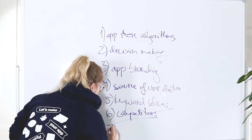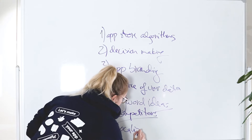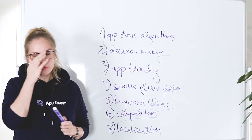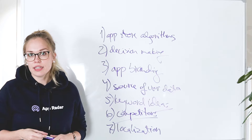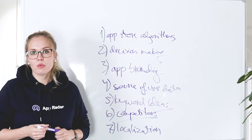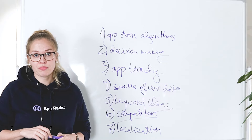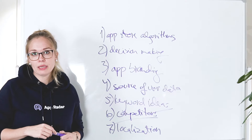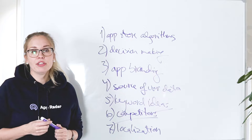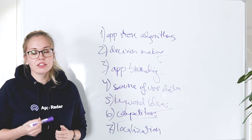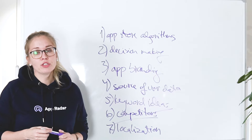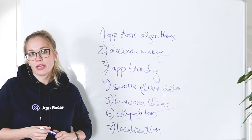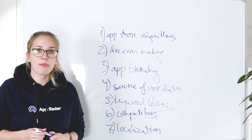Point seven: localization. Chances are this is something you have not considered before, but App Reviews are a really good place to see how people around the world are feeling and thinking about your app or game. Let's say your primary language is English and most of the reviews you focus on are in English. But what about the ones that are in German or in Finnish? You should definitely translate them and see what people in those regions are saying, because maybe they have a different perception of your app. Cultural differences can have an effect on your app and game downloads, and that's why it's so important to focus on app localization. There's no better way to start than by looking at what users from various regions are already saying about your app.